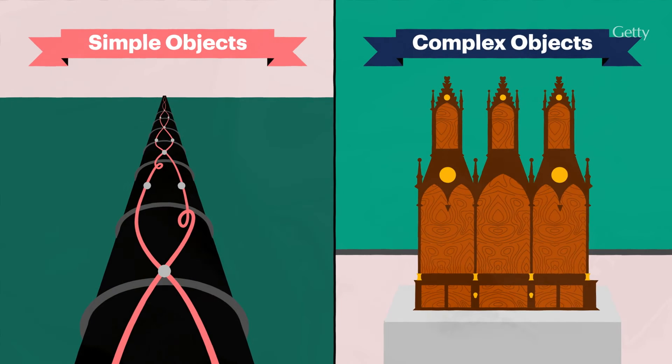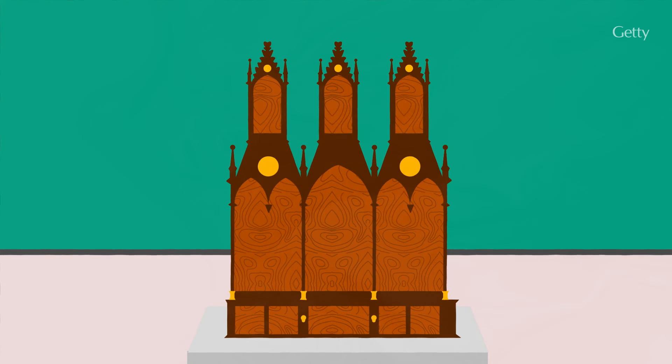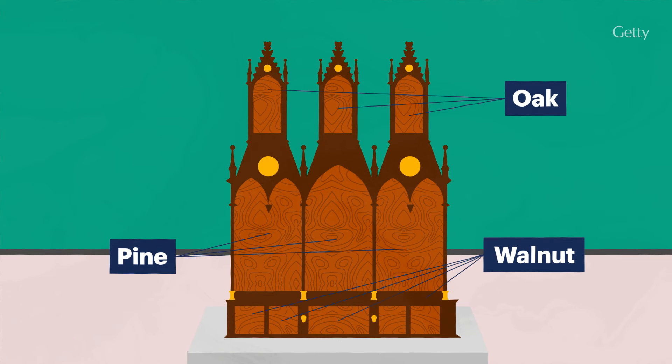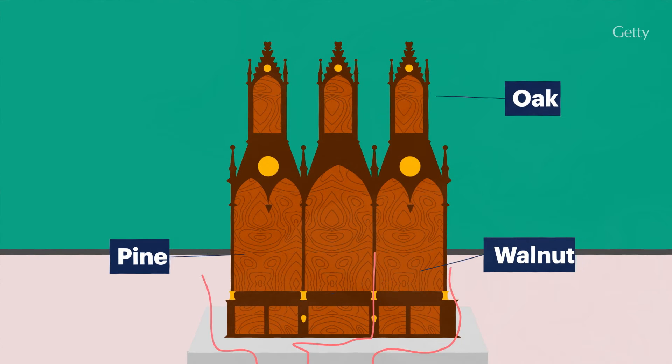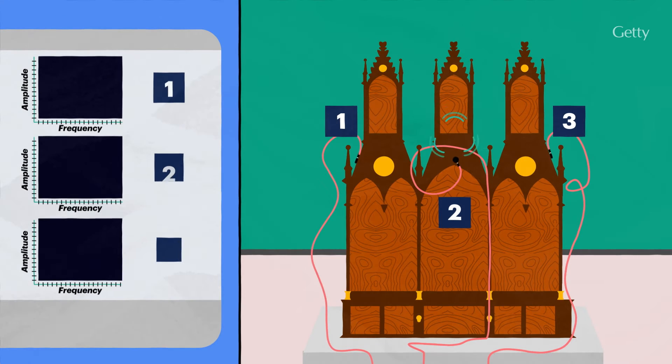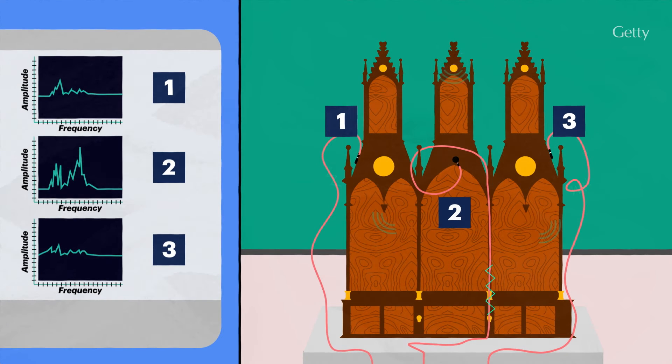But what about the complex objects collections professionals are used to caring for? Take wood for example. It presents difficulties due to variations in its properties, such as species and wood grain direction. These variations can attenuate and dampen AE signals traveling through wood, which makes it difficult to accurately capture the signals.